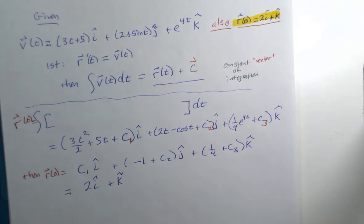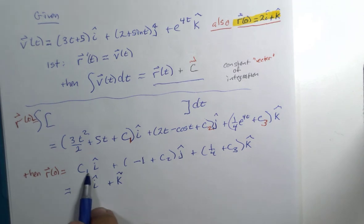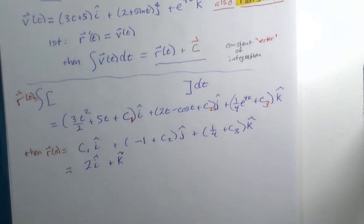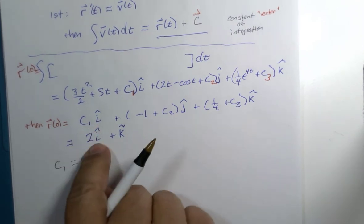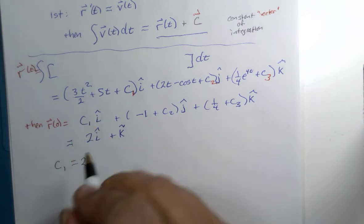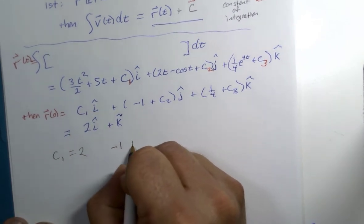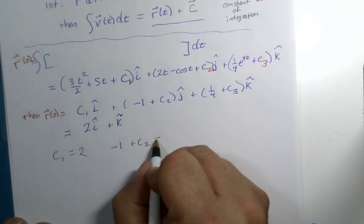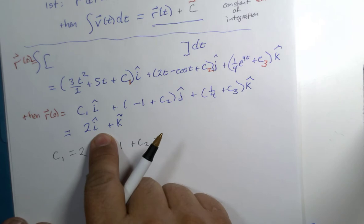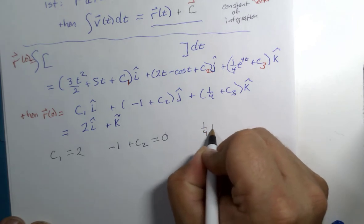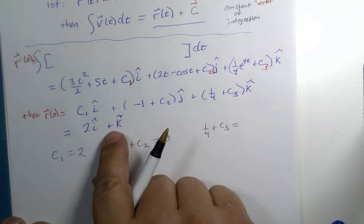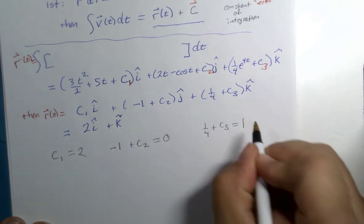But that should be equal to 2i plus k. Now, I'm not a big fan of the mess I've created, but I do know how to read this notation. What we're seeing is that the first term here, the c1, should be equal to the 2 that's here. Those are the i terms. That the negative 1 plus c2 should be equal to the j term here. Wait a second. There's no j term. Well, that's because it's zero. And then the 1 fourth plus c3 should be equal to 1 times k. Just 1.